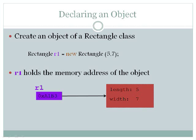Declaring an object. Create an object of a rectangle class. To do this, state rectangle, which is the class name, R1, which is the object name, equals new, because this is a new object, rectangle, and passed to it 5 comma 7.